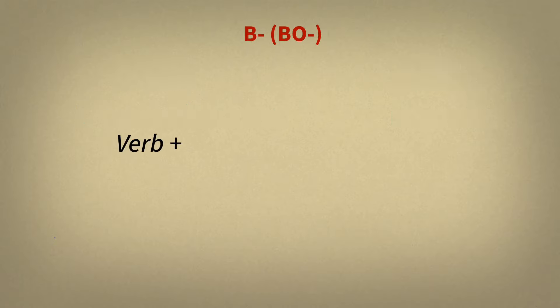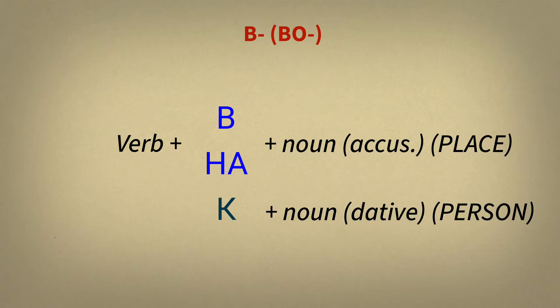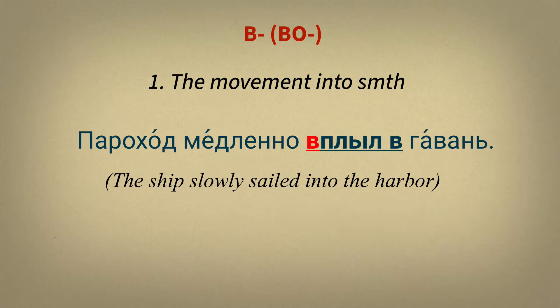These verbs are followed by the prepositions В, На, or К. After prepositions В and На, a noun in the accusative case is used, and the noun indicates a place. After К, a noun in the dative case is used, and the noun indicates a person. For example: ПАРОХОД МЕДЛЕННО ВПЛЫЛ В ГАВАНЬ — ГАВАНЬ is a place, so the preposition В is used, and ГАВАНЬ is in the accusative case.